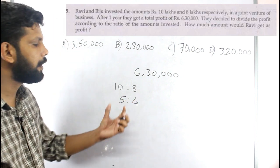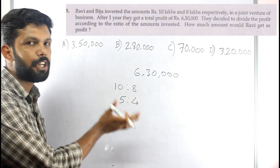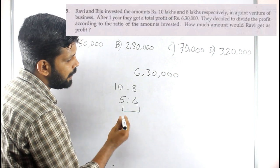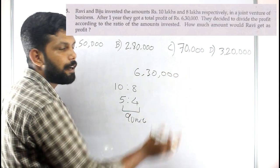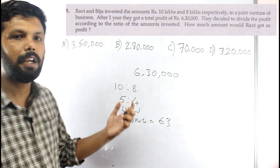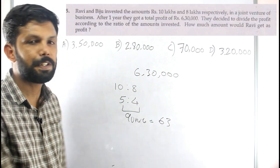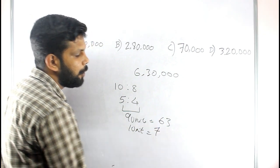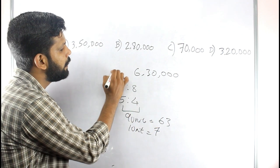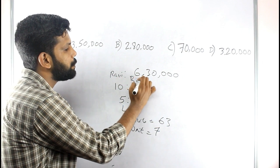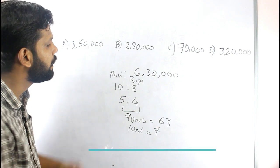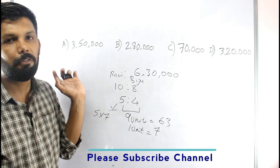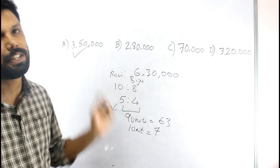The profit is divided in the ratio 5 to 4. Total profit is 6 lakhs 30 thousand, which we write as 63 (ignoring zeros). That is 9 units total. 63 divided by 9 equals 7, so one unit is 7. This is Revi and Biju. We were asked about Revi's profit: 5 into 7 equals 35, so Revi's profit is 35,000. The answer is option A.